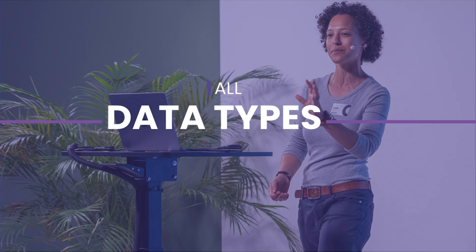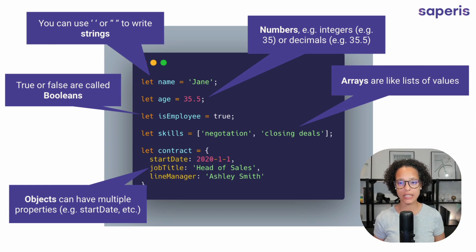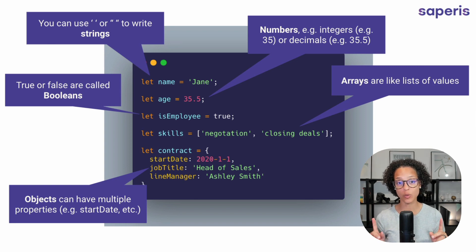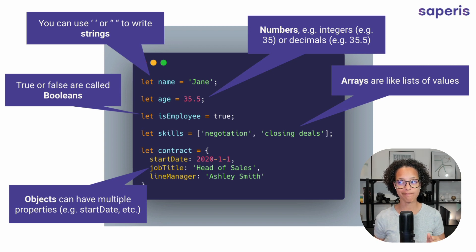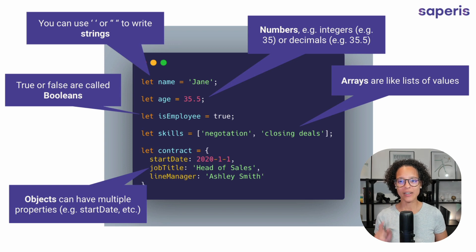All data types. Let's start out with the five most common data types. You can see on screen — these are strings, our written texts, like 'Jane' written. You can write it with either single or double quotation marks. It really depends on which comes more naturally when I'm coding.